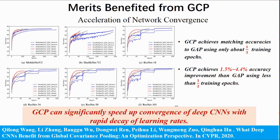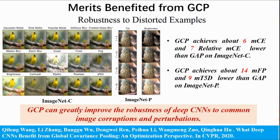Firstly, GCP can significantly speed up convergence of DPCNs with rapid decay of learning rates. Secondly, GCP can greatly improve the robustness of DPCNs to common image corruption and perturbations. Finally, the network trained with GCP can provide a better initialization model for other tasks. Thank you for your attention.